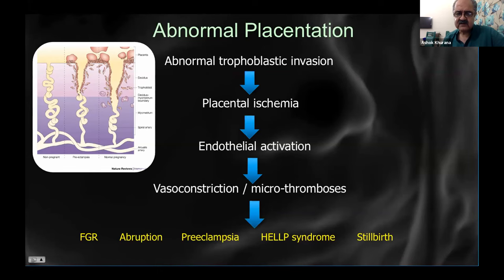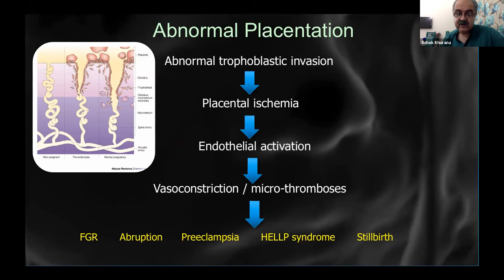This remodeling does not happen in preeclampsia. The cascade of events is the same for other great obstetric syndromes — growth restriction, abruption, HELLP syndrome, and stillbirths. Abnormal trophoblastic invasion causes placental ischemia, which leads to endothelial activation, diffuse vasospasm, and microthrombosis. Prevention is the most important goal. Expectant management means aggressive intervention — treating and preventing the disease or making it less severe.